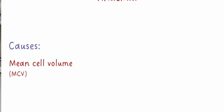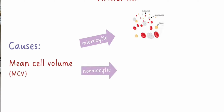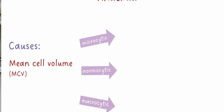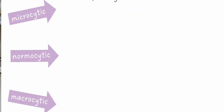You can use microcytic anemia. There is a lot of vitamin B9 and B12. In the case of RBC, you can use MCV to further reduce the risk of normocytic anemia.